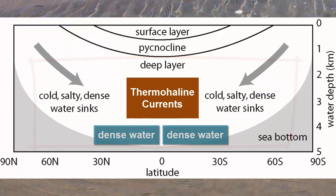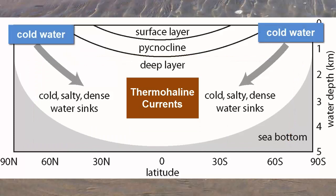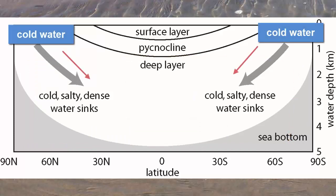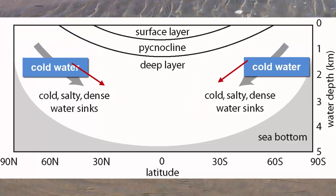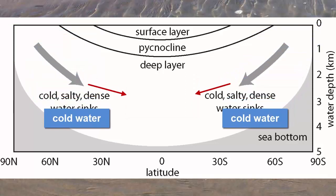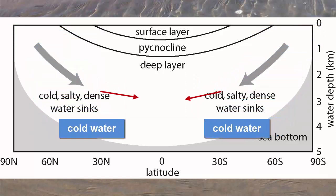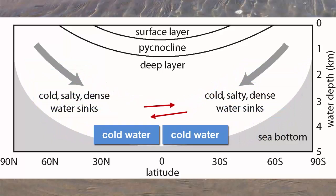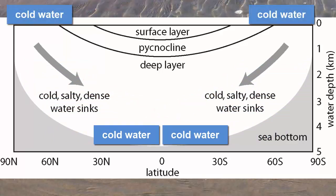For example, cold water at the polar ocean surface is denser than the water around it. When that water sinks, it spreads out laterally across the bottoms of all the world's oceans and becomes the deep water layer. At the poles, therefore, the surface water and deep water are basically the same — same density, same temperature — and they are not separated by a pycnocline.